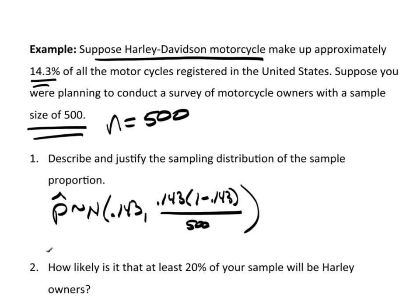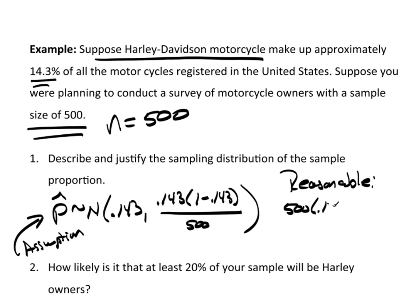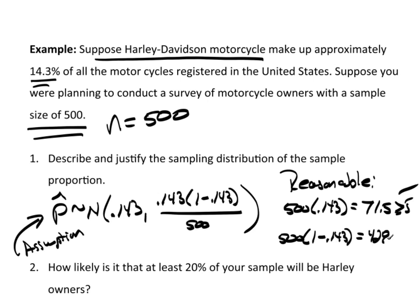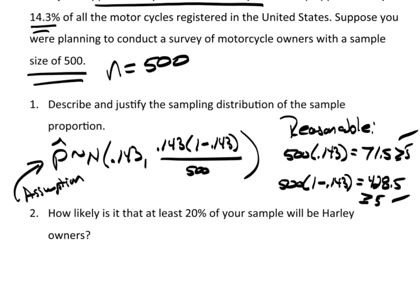How do we know this is reasonable? It's reasonable because 500 times 0.143 is 71.5, which is clearly greater than or equal to 5 — check. And 500 times 1 minus 0.143 is 428.5, which is also clearly greater than or equal to 5 — check. So we know that this normal approximation is a reasonable thing to do, and now we can start calculating probabilities regarding proportions.